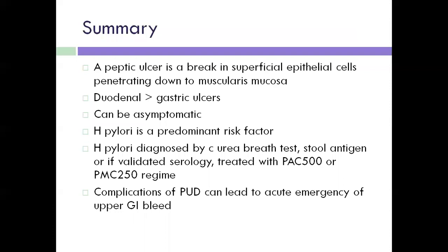This is the summary of peptic ulceration. A peptic ulcer is a break in superficial epithelial cells penetrating down to the muscularis mucosa of the stomach. Duodenal ulceration is more prominent than gastric ulceration. In the primary condition this can be asymptomatic or present with low symptoms. H. pylori is one of the important factors for formation of peptic ulceration and can be diagnosed by urea breath testing, stool antigen, or serological test, and treated with different drugs. Complications can lead to acute emergency of upper GI bleeding.